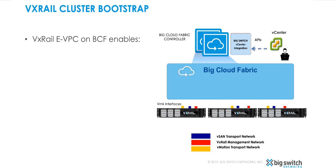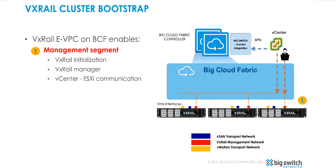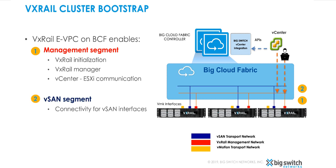The VxRail nodes are auto-detected and placed in the management segment of the VxRail infrastructure eVPC, allowing the nodes to be auto-discovered during VxRail initialization. The management segment also acts as a logical network for communication between the VxRail manager, VxRail nodes, and vCenter. The Vsend segment provides the logical network to establish communication between the Vsend interfaces, which is required for successful validation for building the VxRail cluster. Similarly, the vMotion segment provides the logical network to establish communication between the vMotion interfaces.